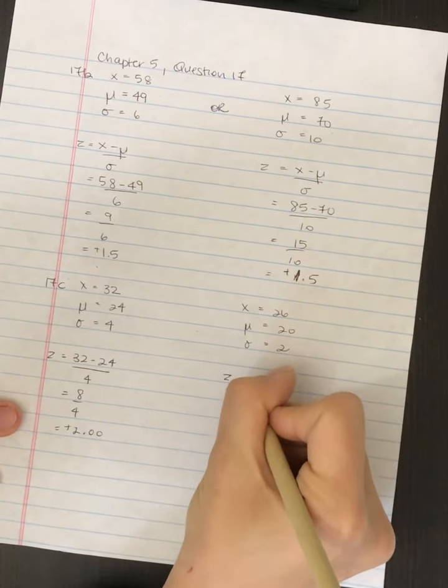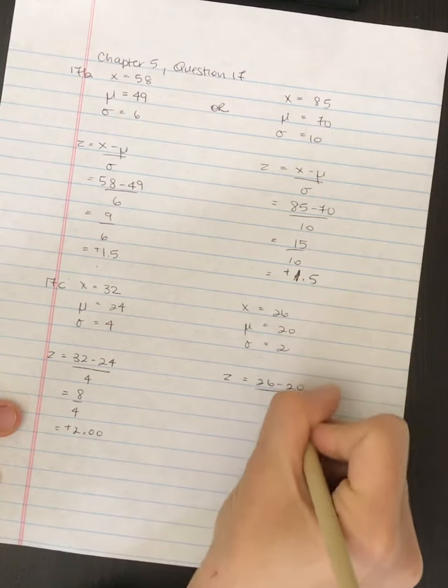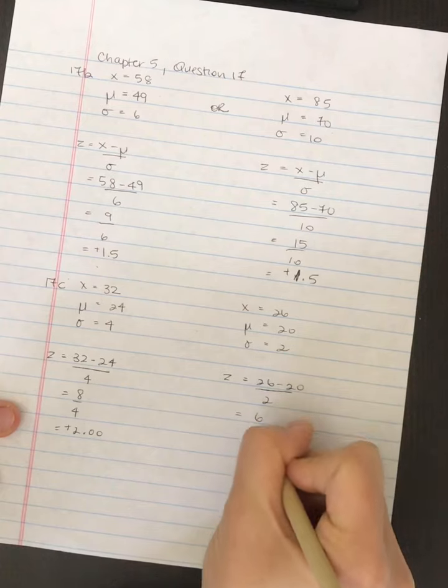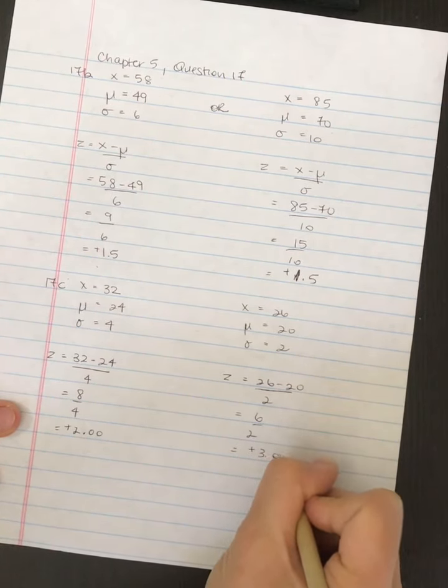And over here we've got 26 subtract 20 divided by 2. So we've got 6 divided by 2, which gives us plus 3.00.